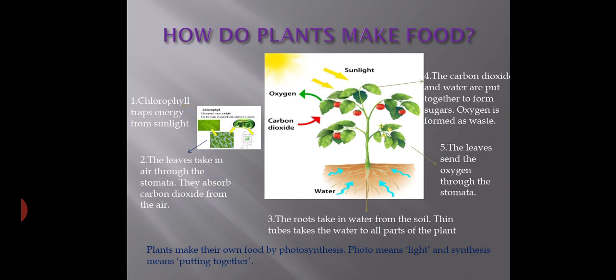Carbon dioxide and water are put together to form sugars — the food molecules. Oxygen is formed as a waste product and is sent out through the stomata into the air. This is the photosynthesis process by which plants make their own food.